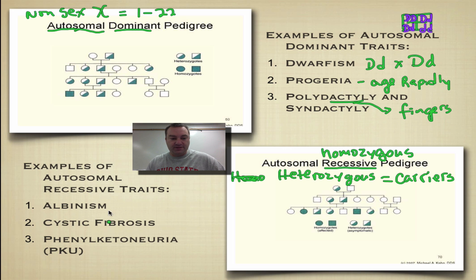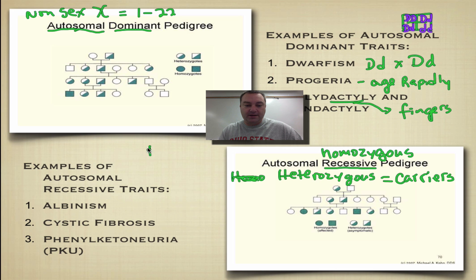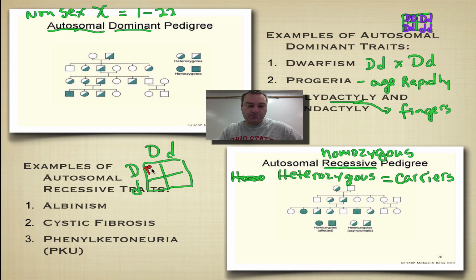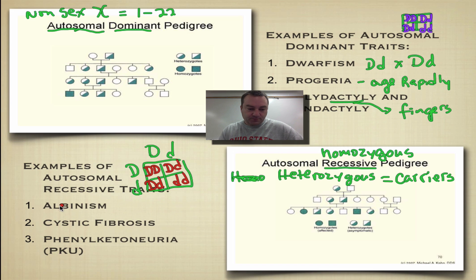Looking at these autosomal recessive trait examples, they're typically passed on by carrier parents. Using a Punnett square with two heterozygous carriers: big D big D is a non-carrier, two big D little d individuals are carriers, and the homozygous recessive individual is the one who shows the trait. Albinism — where you basically have no skin color — is one example.